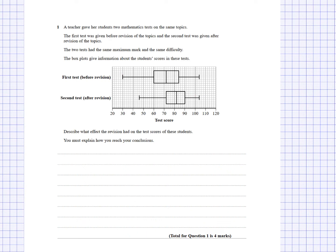Then I'm going to state something about the skew. To find the skew, I need to determine whether the median is closer to the lower quartile or the upper quartile. If it's closer to the lower quartile, it has a positive skew. If it's closer to the upper quartile, it has a negative skew. And if it's in the middle, it's symmetrical. I can state what the skew is for the scores before revision and then again for the second test after revision.